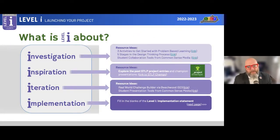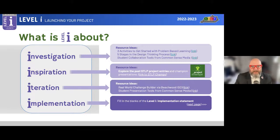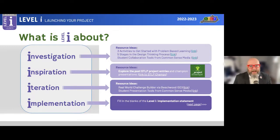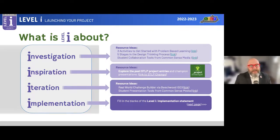Let's look at each level individually. Right now let's talk about level I — where most schools should be at this minute. This is the investigation stage, the inspiration, iteration, and implementation stage where brainstorming occurs. There are links in the resources that take you to where students can learn about how to get started with project-based learning and stages in design thinking. For inspiration, you can also look back at presentations past champions have submitted to get a feel for how STLP state champs have reached the top.